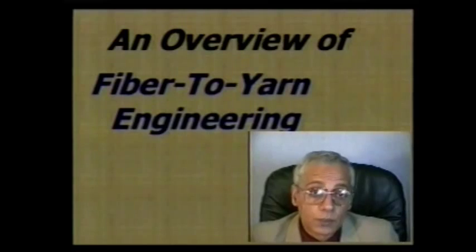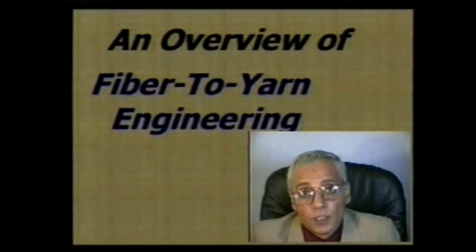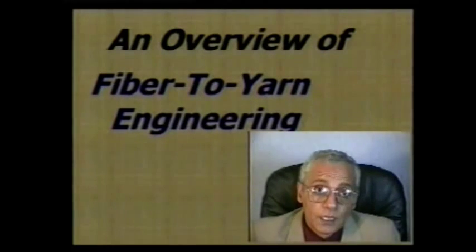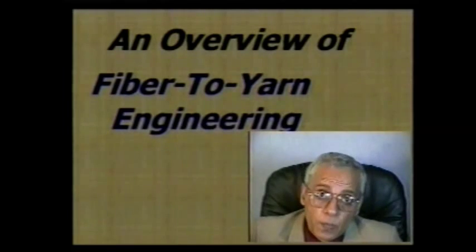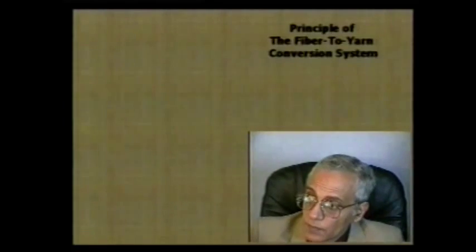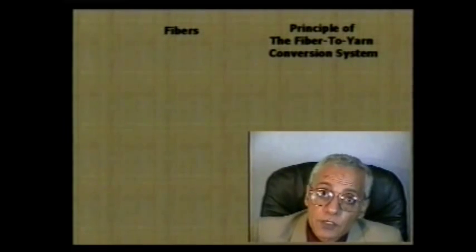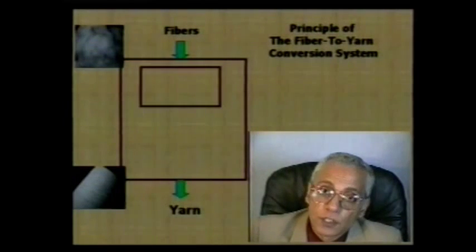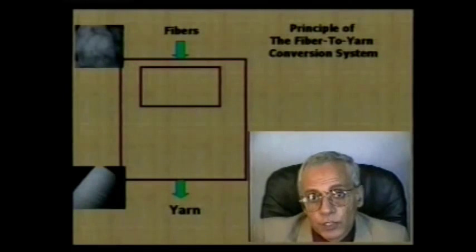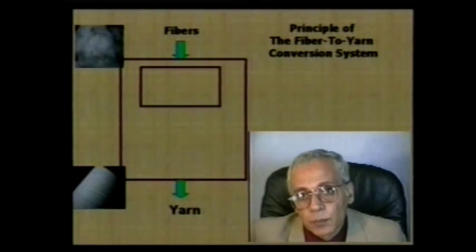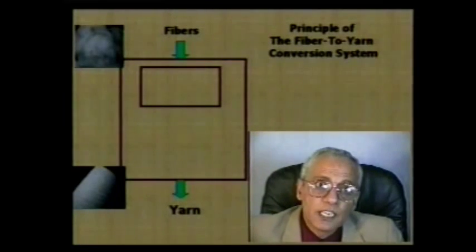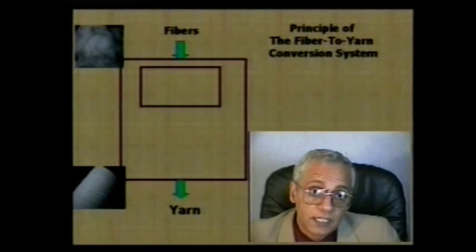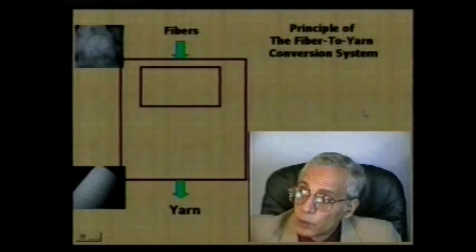Perhaps the best way to start this overview is to discuss the principle of the fiber to yarn conversion system — an issue that all spinners are familiar with. The system is very simple in principle: the input material is fibers and the output material is yarn. A yarn may be considered a final product for a spinner, or an intermediate product used in further processing such as weaving, knitting, and other applications.